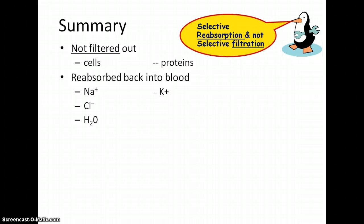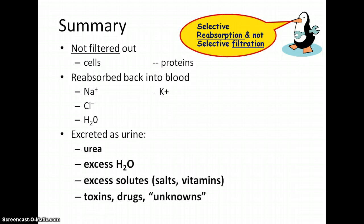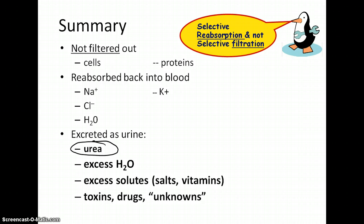Because we're land animals, we want to save and conserve water as much as possible. What is excreted as urine includes nitrogenous wastes that your cells accumulate, extra water we don't need, extra salts, water-soluble vitamins, and byproducts of any medications you're on.